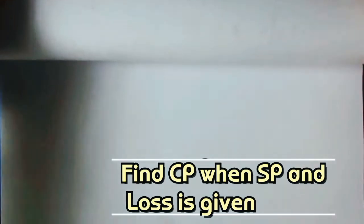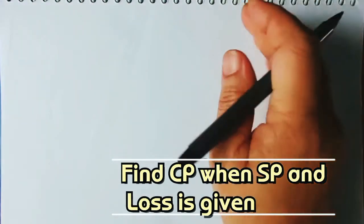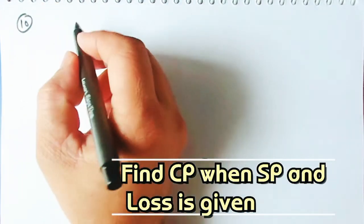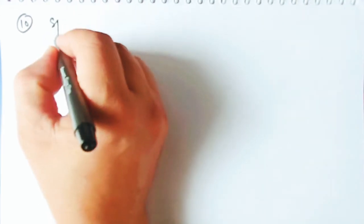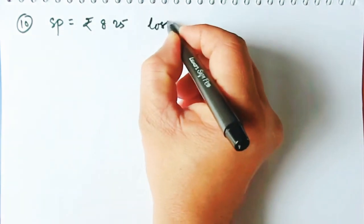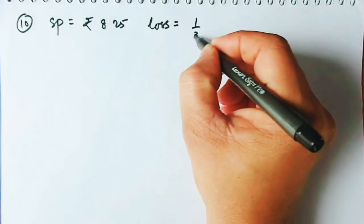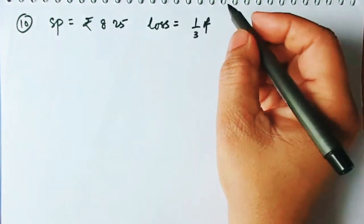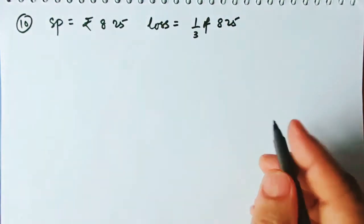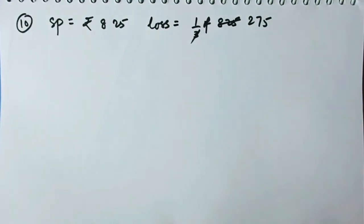Moving on to number 10: by selling an article for ₹825, a man incurs a loss equal to 1/3rd of its selling price. So the loss = 825 × 1/3 = ₹275.